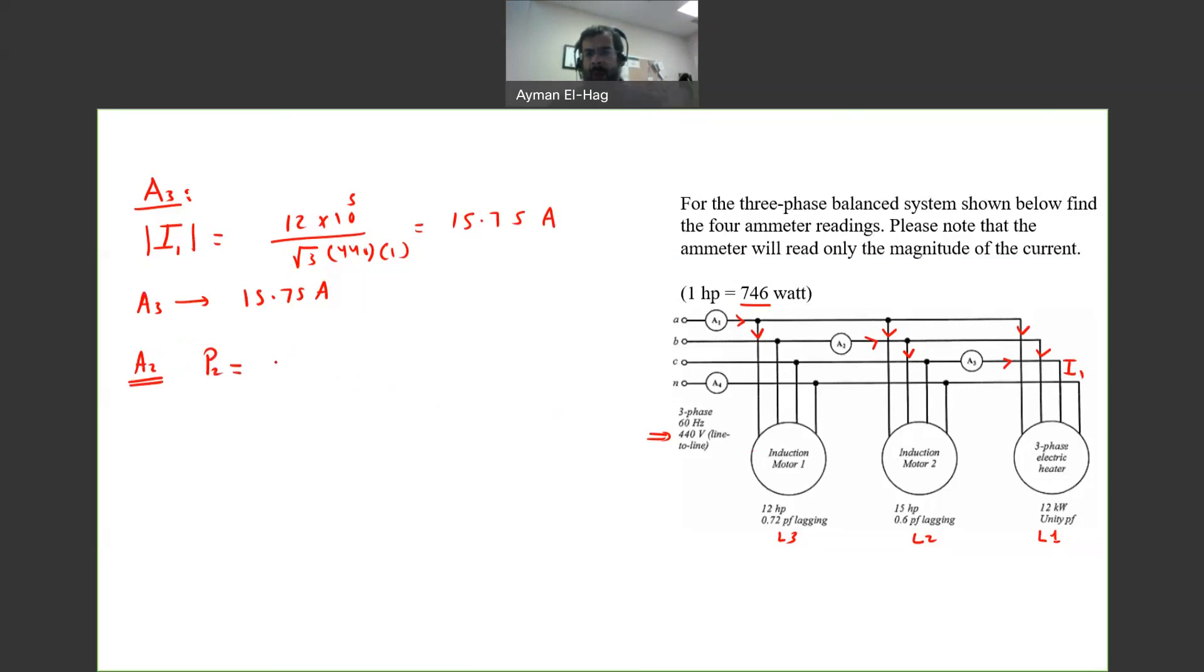Now talk about load two. We have P2 equal to 15 horsepower, which is equal to 15 times 746 to convert to watt, which gives us 11.19 kilowatt. Theta 2 is equal to cosine inverse of 0.6, which is equal to 53.13 degrees.